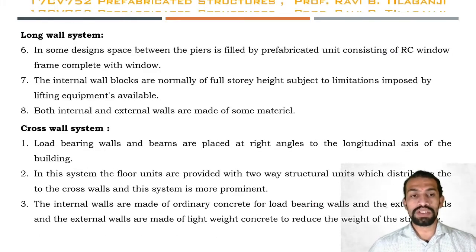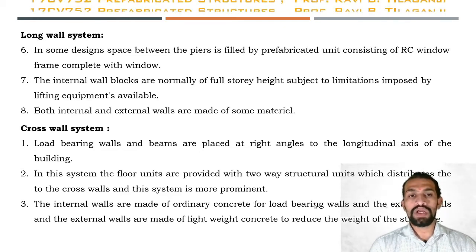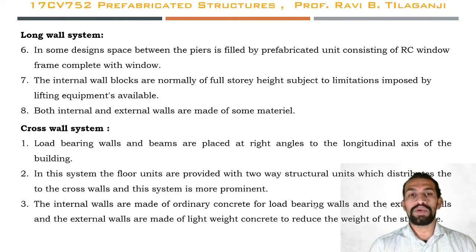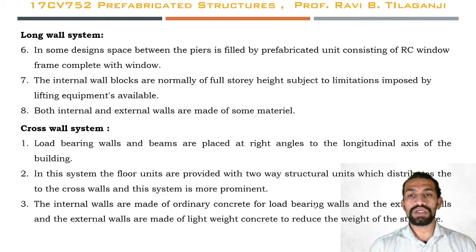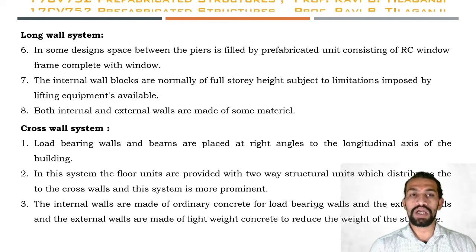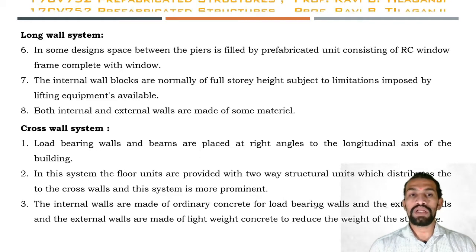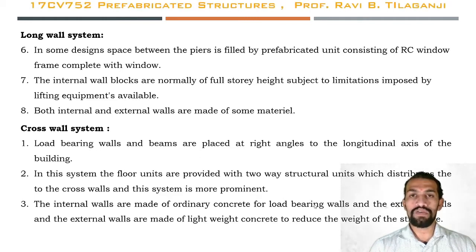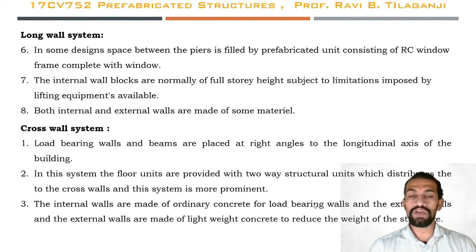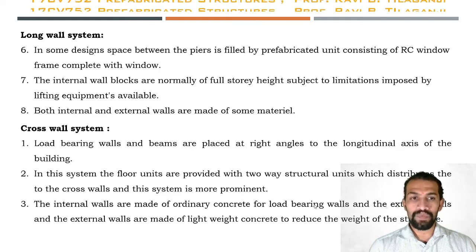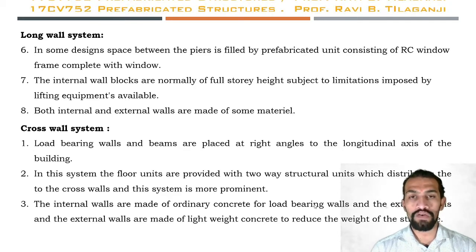In some long wall system designs, the space between piers is filled by a prefabricated unit consisting of a reinforced concrete window frame complete with window. Internal wall blocks are normally of full storey height, subject to limitations imposed by available lifting equipment. Both internal and external walls are made of the same materials.